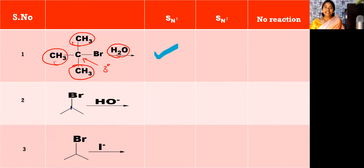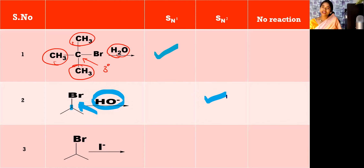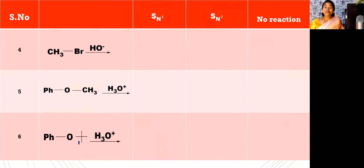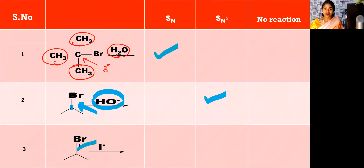See the next one — it is secondary. If it is tertiary, SN1; if it is primary, SN2. Coming to the secondary, how can you identify whether it is SN1 or SN2? You have to see the nucleophile which is present on the arrow. OH⁻ is a strong nucleophile — strong nucleophile favors SN2. And here, I⁻ is a strong nucleophile — strong nucleophile favors SN2. This is a secondary alkyl halide with a strong nucleophile, so SN2.